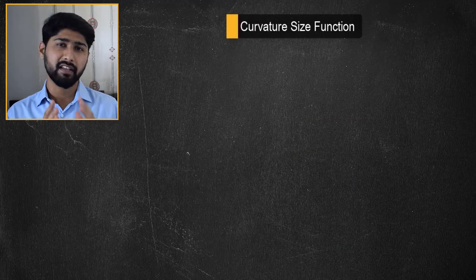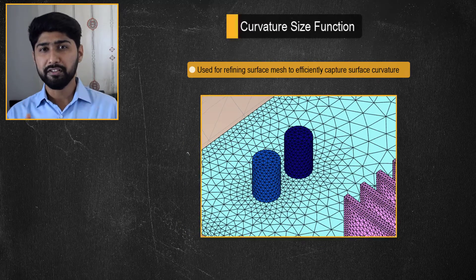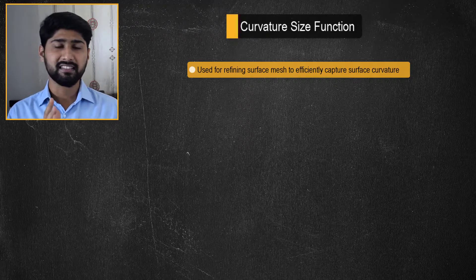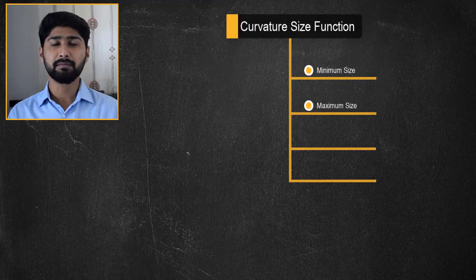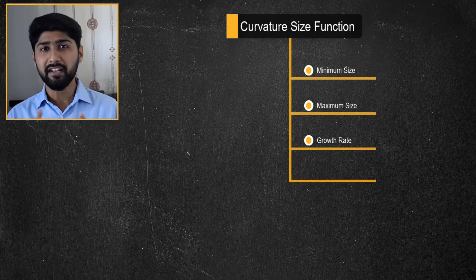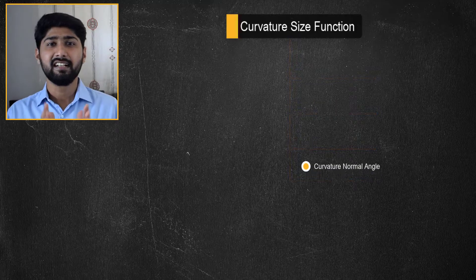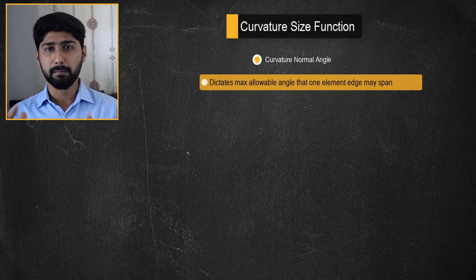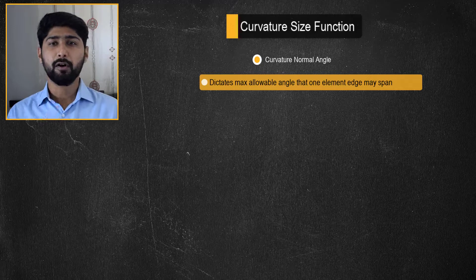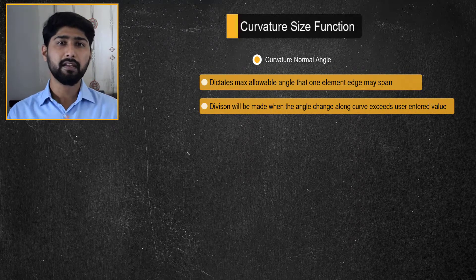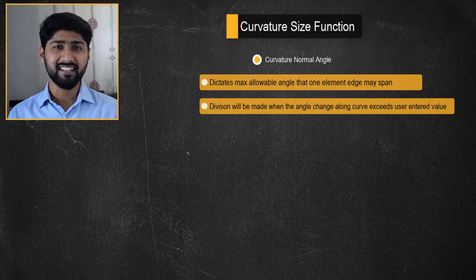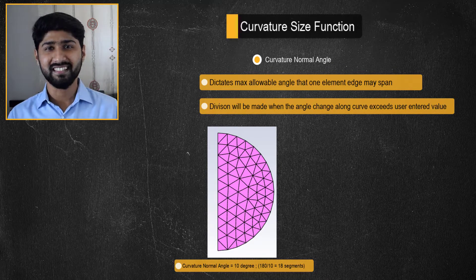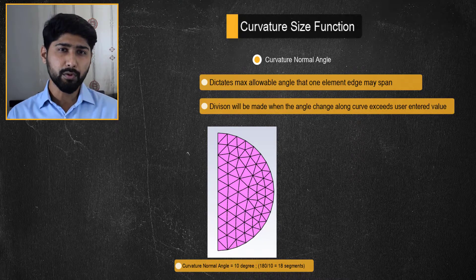The curvature size function is generally used for refining the surface mesh to efficiently capture surface curvature, much like the curvature option in the local sizing task. This option uses the minimum and maximum size, growth rate inputs, in addition to the curvature normal angle. The curvature normal angle dictates the maximum allowable angle that one element edge may span. For example, a value of 10 implies that a division will be made when the angle change along the curve is 10 degrees, and therefore a 180 degree arc will be divided into approximately 18 segments. A smaller normal angle generates a more refined surface mesh.